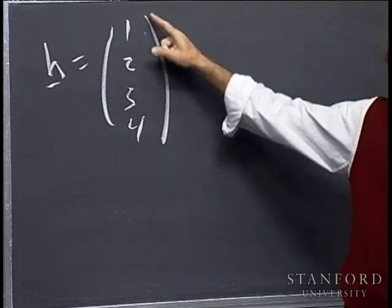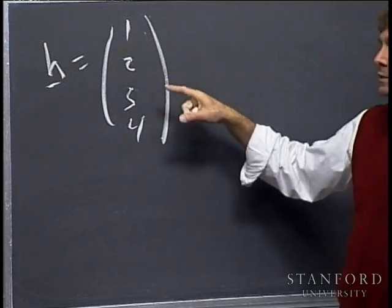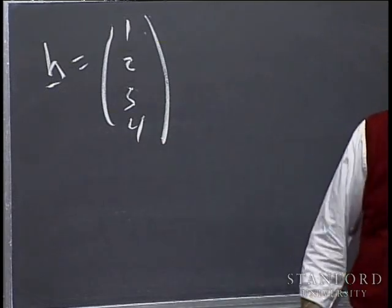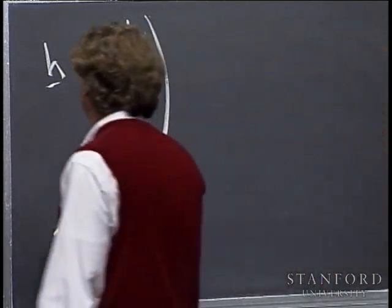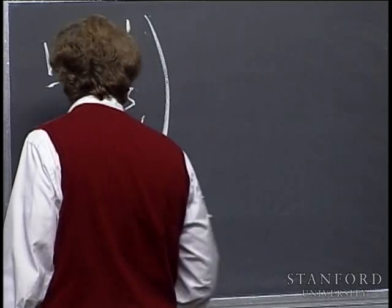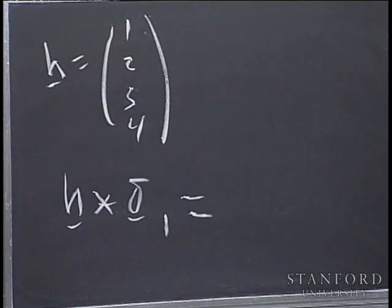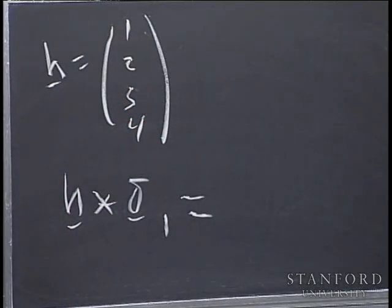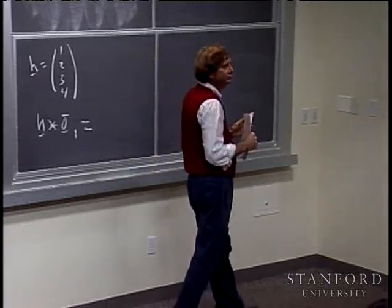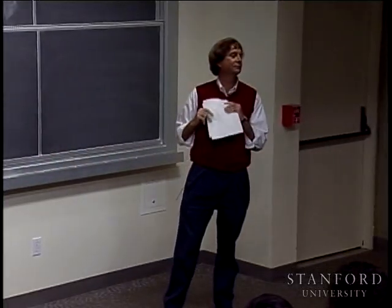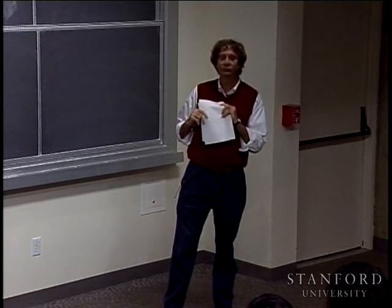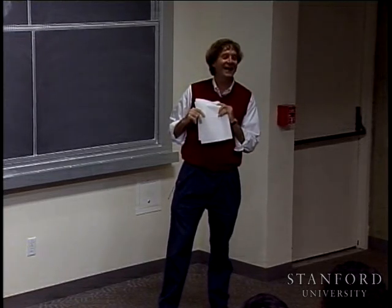We set things up so the formalism and symbols would look as much as possible like the continuous case. Now, at long last, let's bring in the Fourier transform for LTI systems. LTI systems are given by convolution — bells should go off in your head, buzzers should go off in your pocket. Whatever happens, you should think of the Fourier transform.